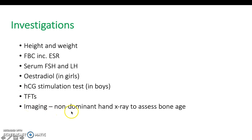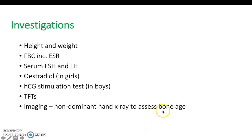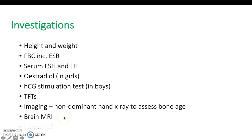The HCG stimulation test is done for boys and aims to stimulate testicular production of testosterone. A poor response suggests primary hypogonadism, but a rise in testosterone suggests constitutional delay. Thyroid function tests check for hypothyroidism as a cause. Imaging with a non-dominant hand X-ray assesses bone age — you'll see a low skeletal bone age in constitutional delay, specifically around age 12–13. A brain MRI is indicated if neurological symptoms suggest a brain tumour, and a pelvic ultrasound assesses anatomical abnormalities, undescended testes, or Müllerian agenesis.